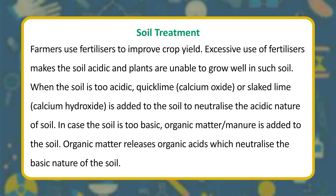Soil treatment: farmers use fertilizers to improve crop yield. Excessive use of fertilizers makes the soil acidic, and plants are unable to grow well in such soil. When the soil is too acidic, quick lime (calcium oxide) or slaked lime (calcium hydroxide) is added to neutralize it. If the soil is too basic, organic matter or manure is added — organic matter releases organic acids which neutralize the basic nature of the soil.